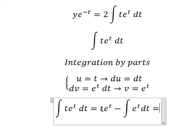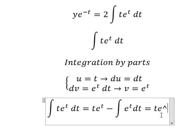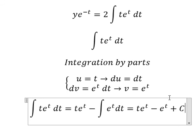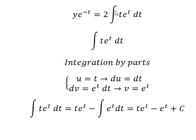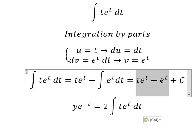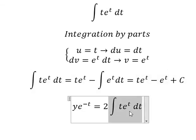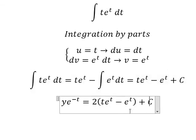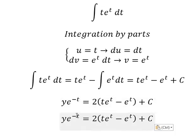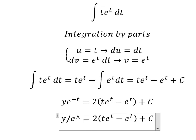We get the final answer with e to the power of negative t terms. We can rewrite this as y over e to the power of t.